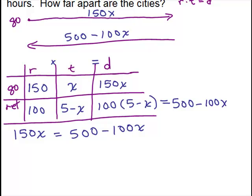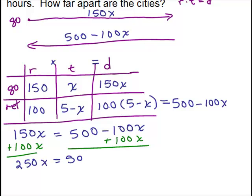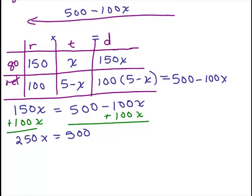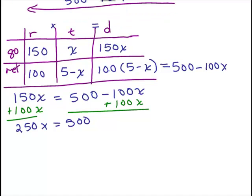So now we need to solve this equation. We need to get all the variables on one side, so let's add 100X to both sides. And that gives me 250X equals 500. Divide both sides by 250. So X is 2.